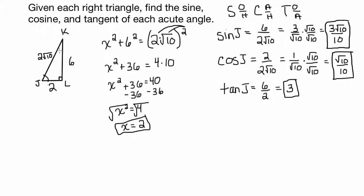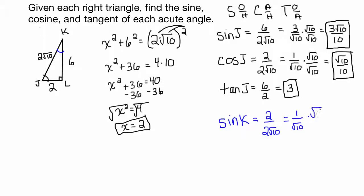Now let's move on to angle K. We need to find the sine, cosine, and tangent of angle K. The sine of K is opposite over hypotenuse. Opposite is 2, hypotenuse is 2 root 10, and that simplifies to 1 over root 10. Then we must rationalize, and we end up with root 10 over 10.